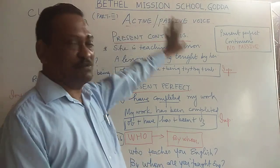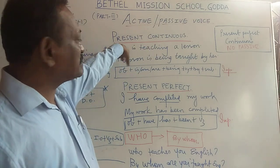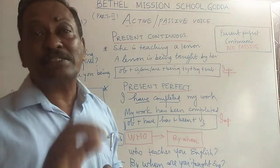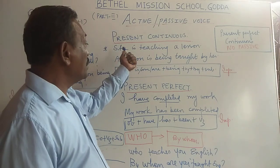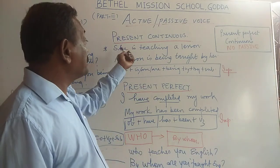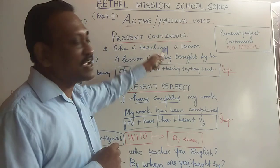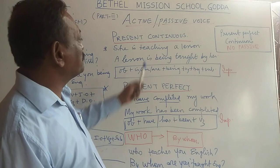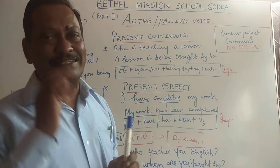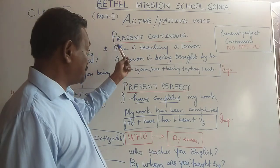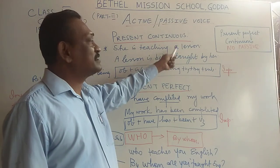Let us start with the present continuous. A present continuous always has a helping verb followed by the present participle. For example: 'She is teaching a lesson.' In this sentence, 'she' is the subject, followed by the helping verb 'is', and then the main verb in present participle form, which is 'teaching'. So 'she' is the subject, 'teaching' is the main verb, and 'is' is the helping verb.